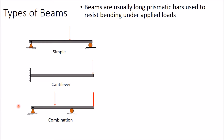You can have both side overhang — that means this extended portion can be extended on this side also. In that case it is called double overhang. Here it is single overhang.